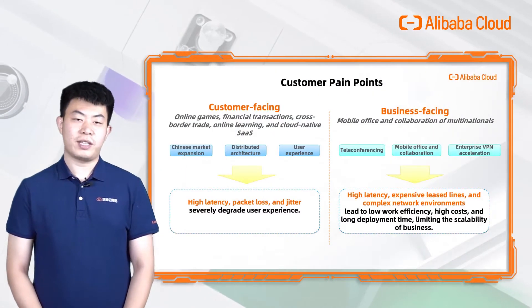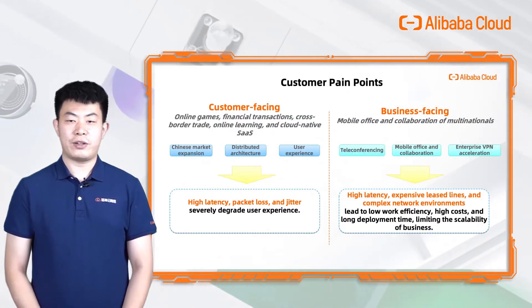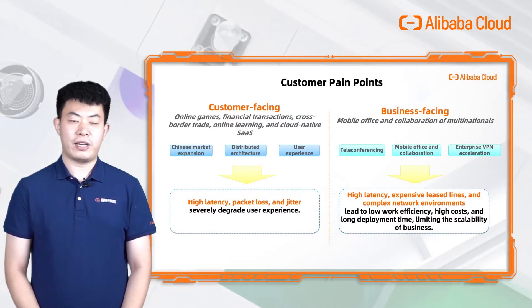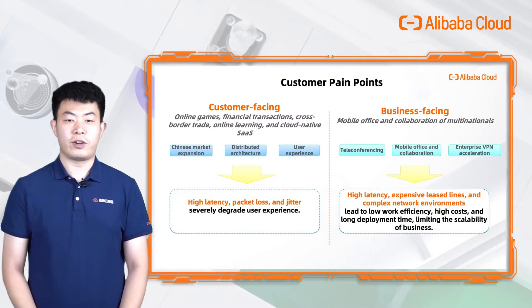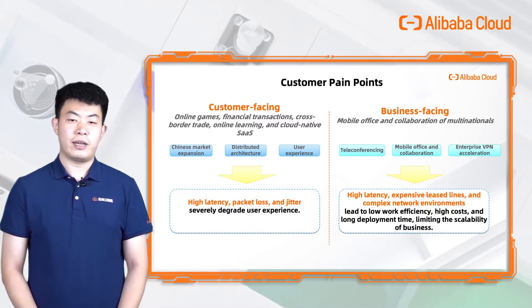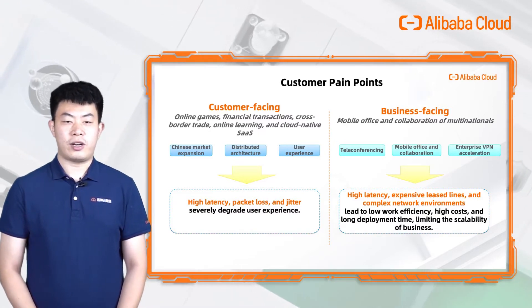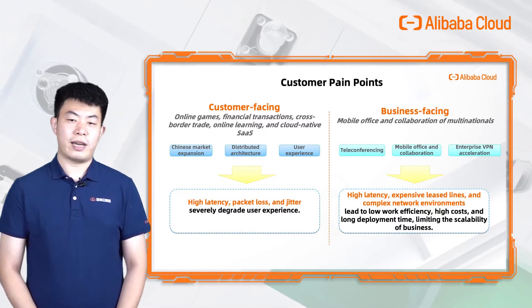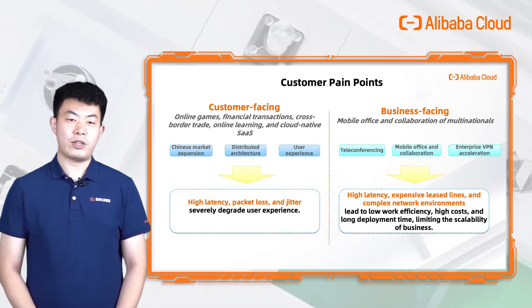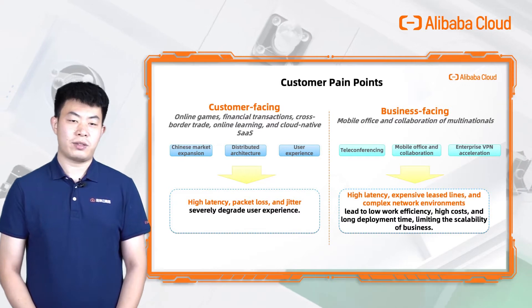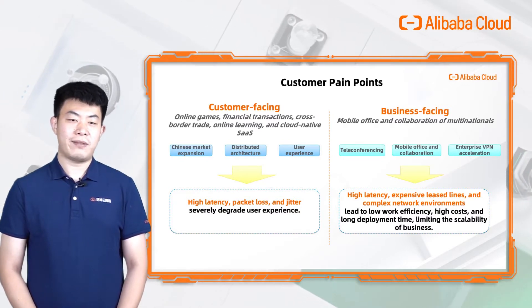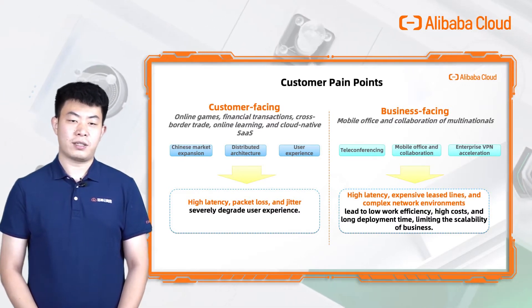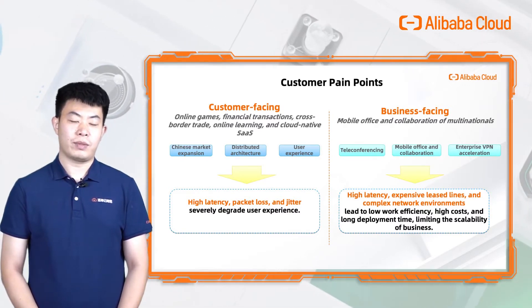User services are generally divided into two categories. The first is external services such as online games, financial transactions, online education, native SaaS services, and so on.